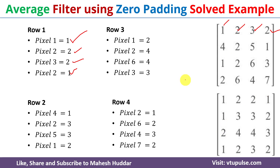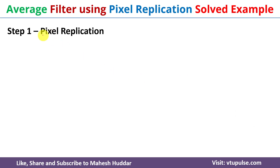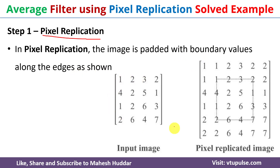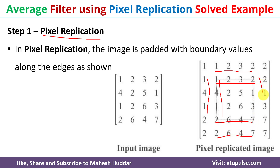Next we will find the average filter using pixel replication. In pixel replication, the image is padded with boundary values along the edges. This is the input image. While doing pixel replication we pad the boundary values: the first row is replicated at the top, the first column values on the left, the last row values at the bottom, and the last column values on the right. For the corners: top-left is 1, top-right is 2, bottom-left is 2, and bottom-right is 7.